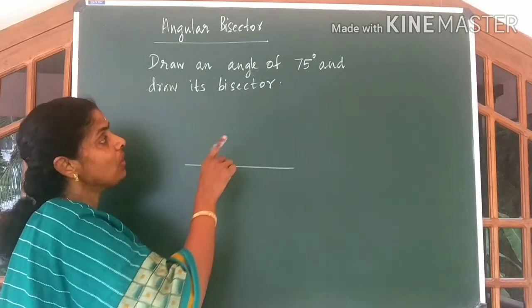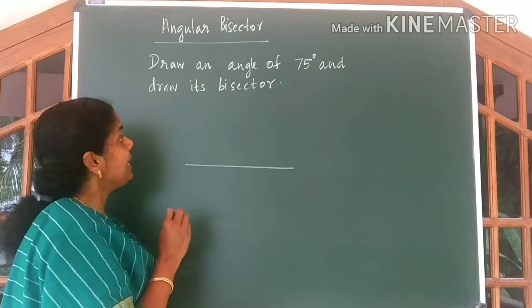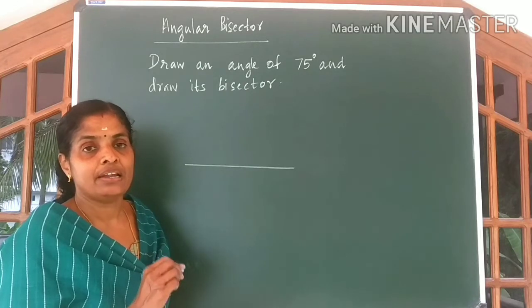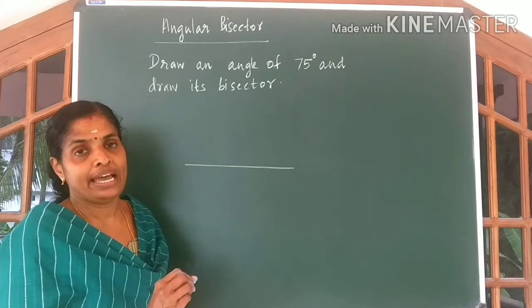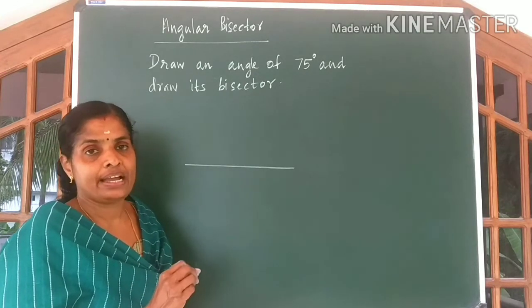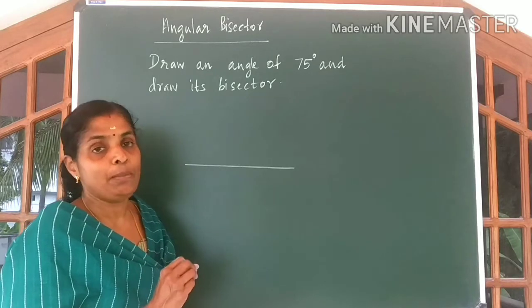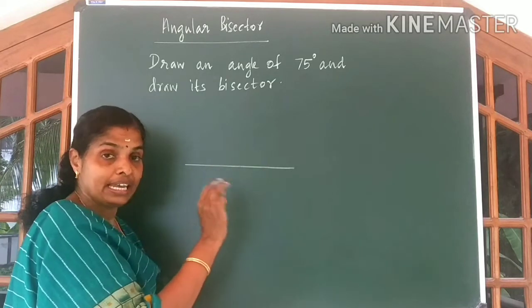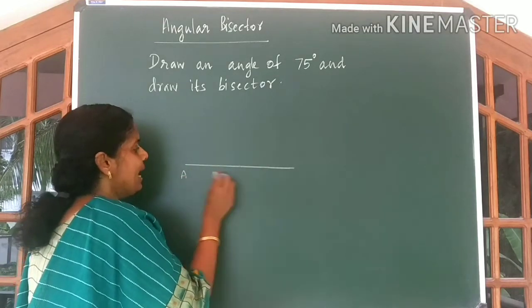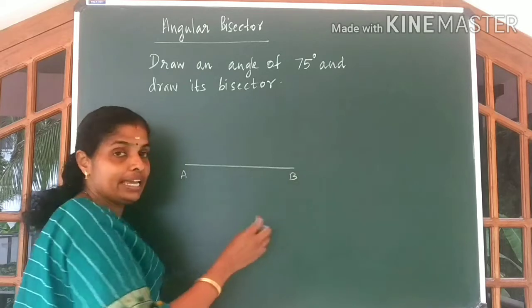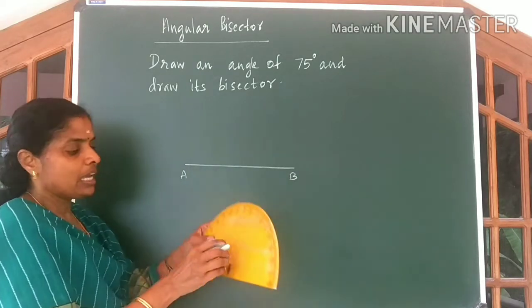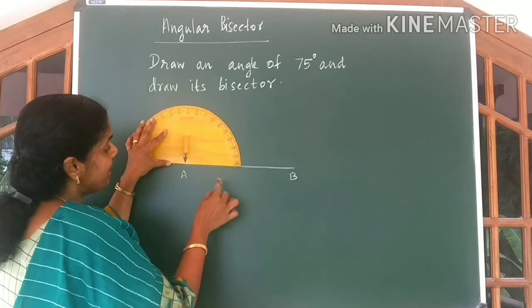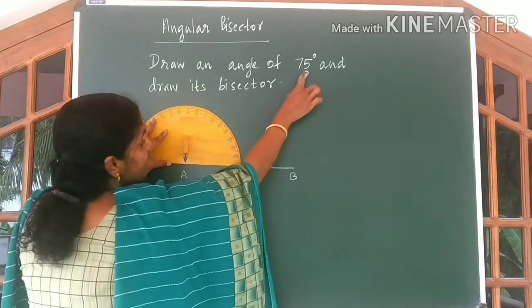Look at the question. Draw an angle of 75 degrees and draw its bisector. What do you know about a bisector? Bisector of an angle divides the angle into two equal parts. See how I am going to construct. First of all, I have drawn a line of any measure.